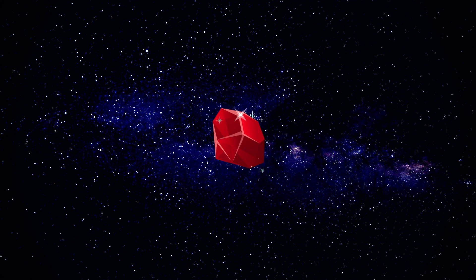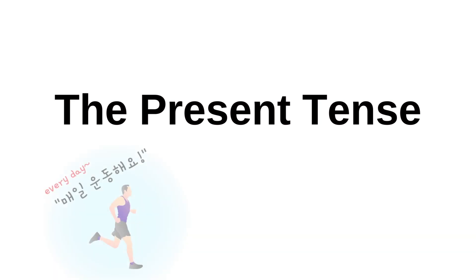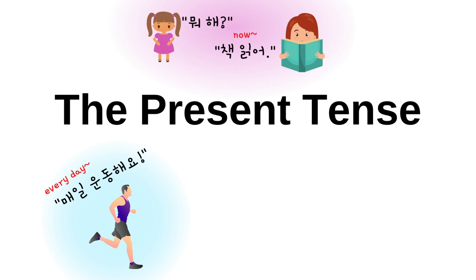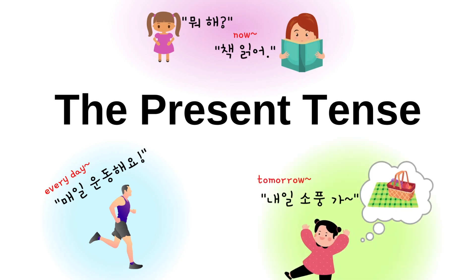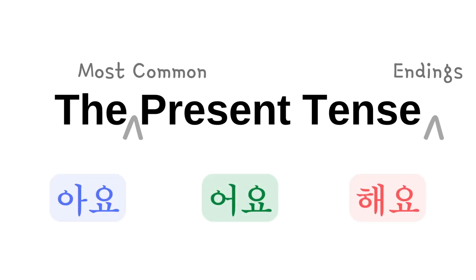Hello, everybody. Welcome back to my channel. I am Ruby. In this lesson, we are going to learn the present tense in Korean. The present tense is used when you are talking about what you usually do, what you are doing now, or what you are going to do in the near future. In this lesson, we are going to focus on the most common present tense endings, which are 아요, 어요, and 해요.